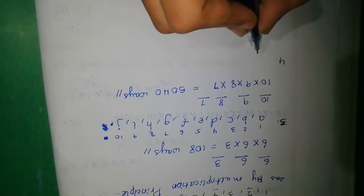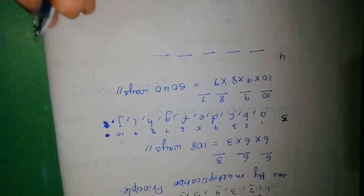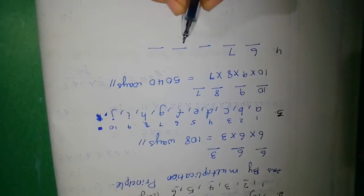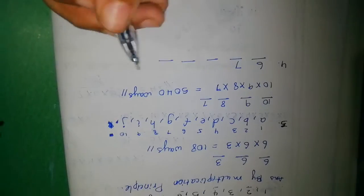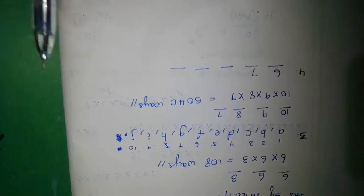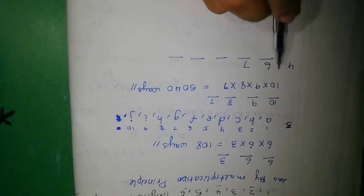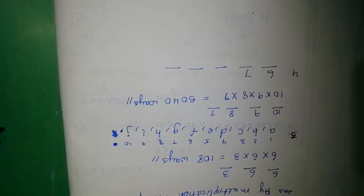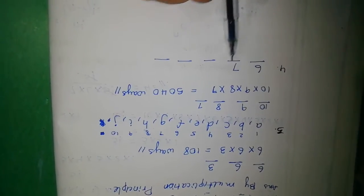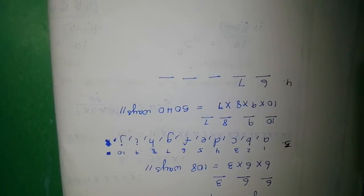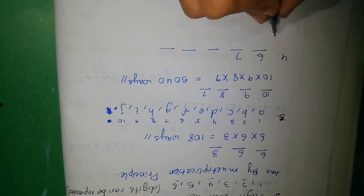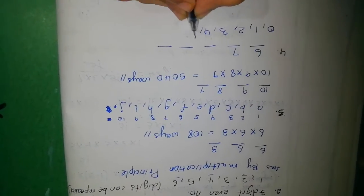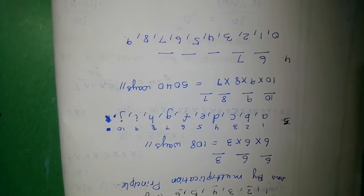Fourth question: how many five-digit telephone numbers can be constructed using the digits 0 to 9, if each number starts with 67 and no digit appears more than once? They have given five digit places, and the first two are fixed as 6 and 7. No digit appears more than once — so repetition is not allowed.